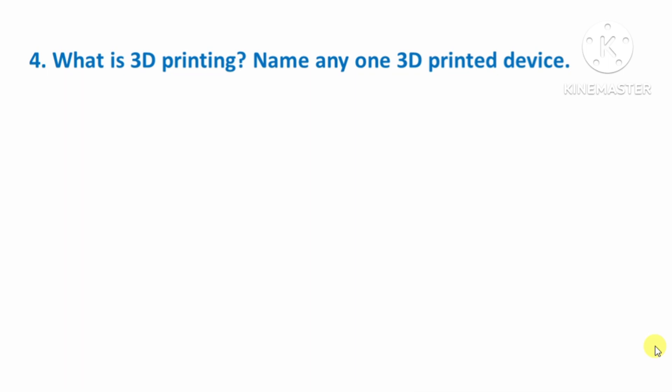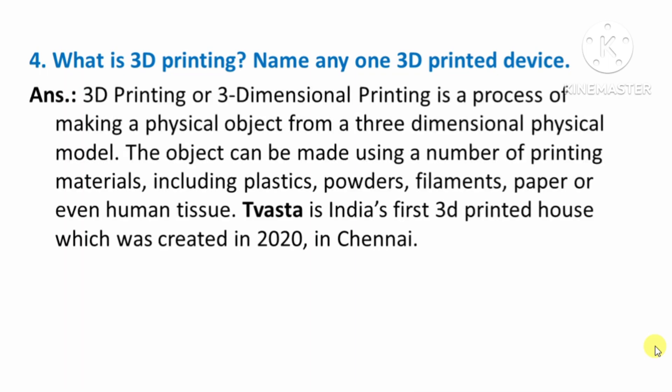Next question: What is 3D printing? Name any one 3D printed device. Answer: 3D printing is a process of making a physical object from a 3D digital model. The object can be made using a number of printing materials such as plastics, powders, filaments, paper, or even human tissues. Tivasta is India's first 3D printed house, created in 2020 in Chennai.